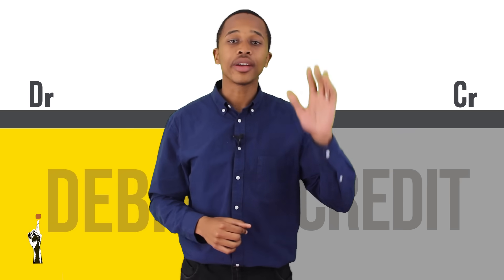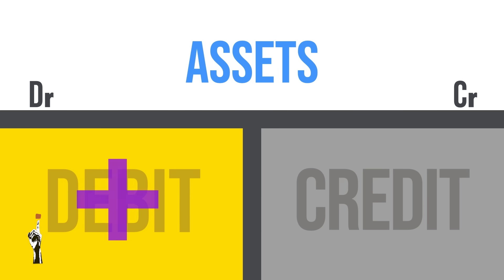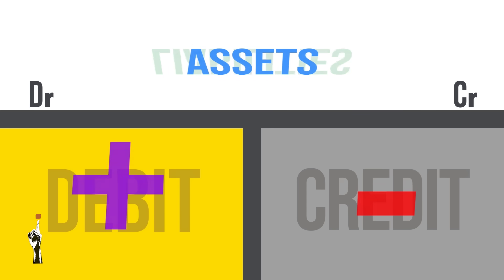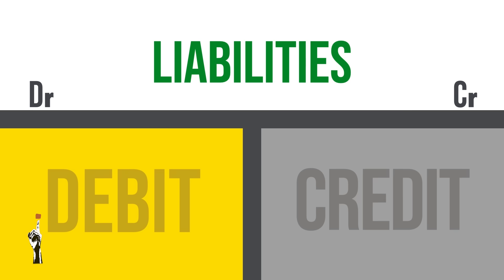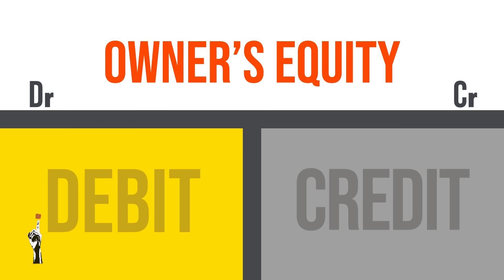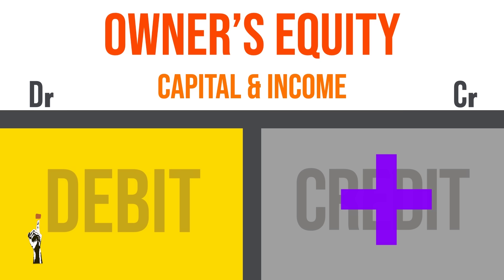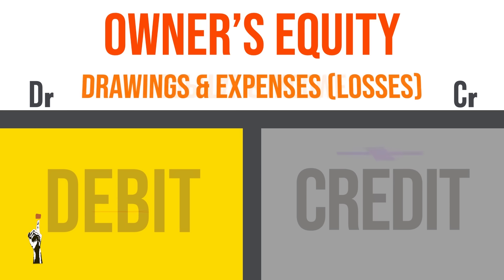This is called a T-account. On the left-hand side we have the debit side; on the right-hand side we have the credit side. Assets increase on the debit side and decrease on the credit side. Liabilities, on the other hand, increase on the credit side and decrease on the debit side. Drawings and expenses or losses increase on the debit side and decrease on the credit side.